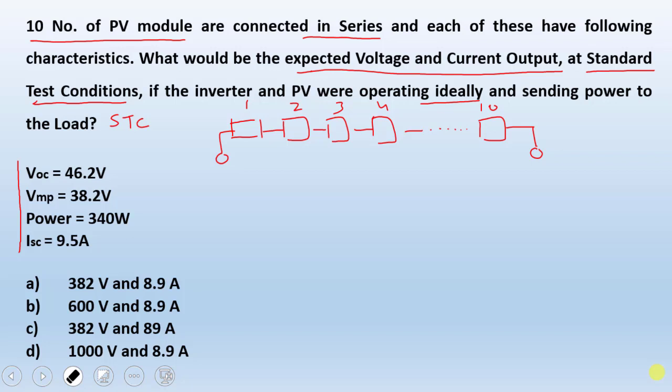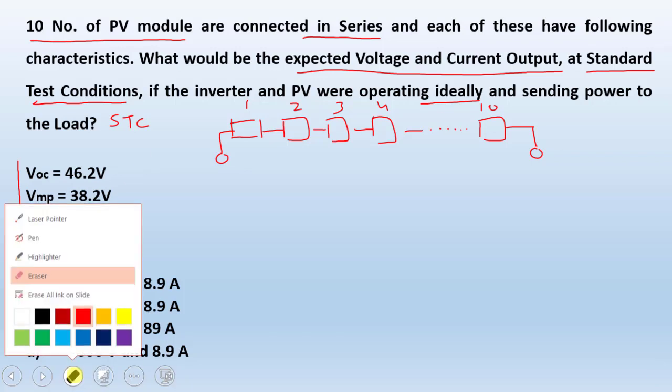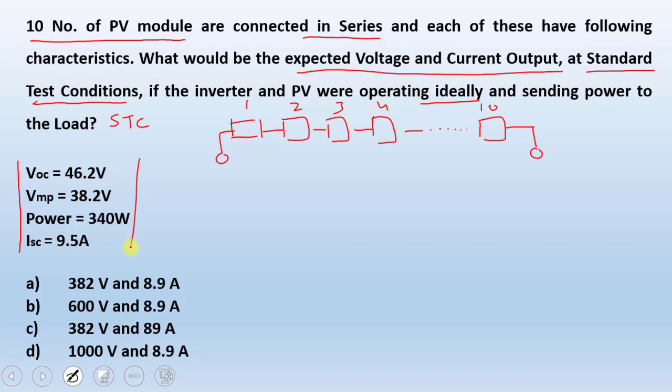We know that in series connected systems, the current produced by one module is the same for all the modules. So we are dealing here with the Standard Test Conditions. Under Standard Test Conditions for a given specification, which are here, this data we can see that we are given Voc, open circuit voltage. We are given Voc, open circuit voltage, Vmp, maximum power voltage.